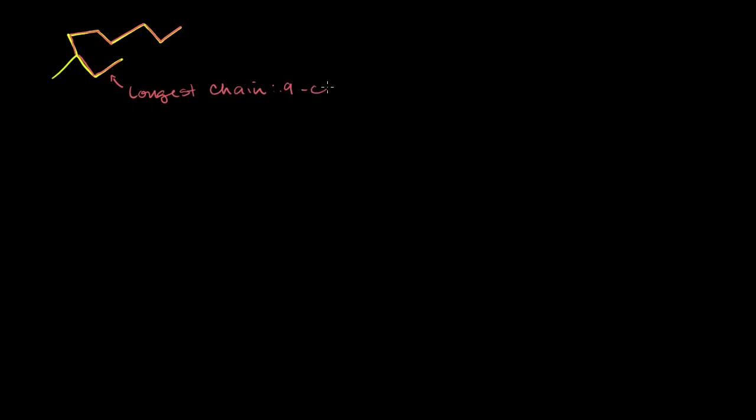What we do in this situation is we find the longest chain in this molecule. If we start from one end, we get 8 carbons. If we start from the other end, we get 9 carbons. So the longest chain is 9 carbons, and that will be the core of our naming — the backbone. With 9 carbons, we're dealing with a nonane. Remember, 'non' is for 9, and 'ane' because we're dealing with an alkane — all single bonds.